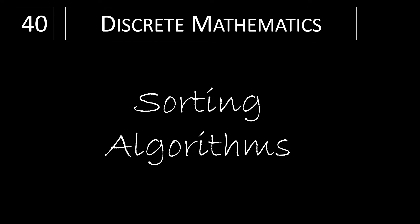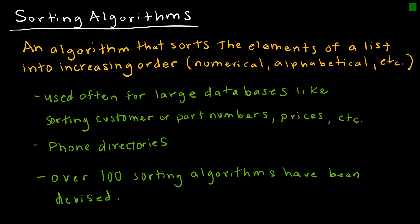In this video we're going to take a look at sorting algorithms. A sorting algorithm is an algorithm that essentially sorts the elements of a list into increasing order — numerical, alphabetical, whatever it is that we're trying to order. We often use sorting algorithms in large databases, like sorting customer or part numbers, sorting prices, phone directories by last name, etc.